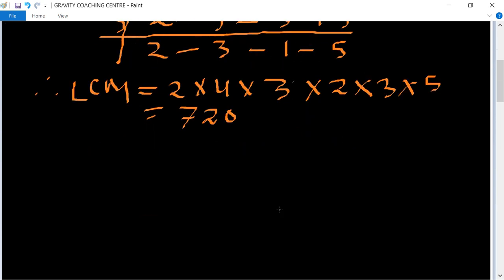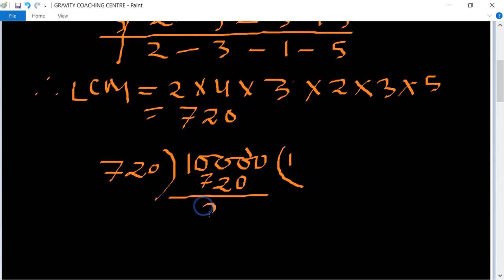Now divide 10,000 by 720. So table of 1: 720 minus 2,280. Now the table of 3: 2,160. After subtracting, remainder is 640.